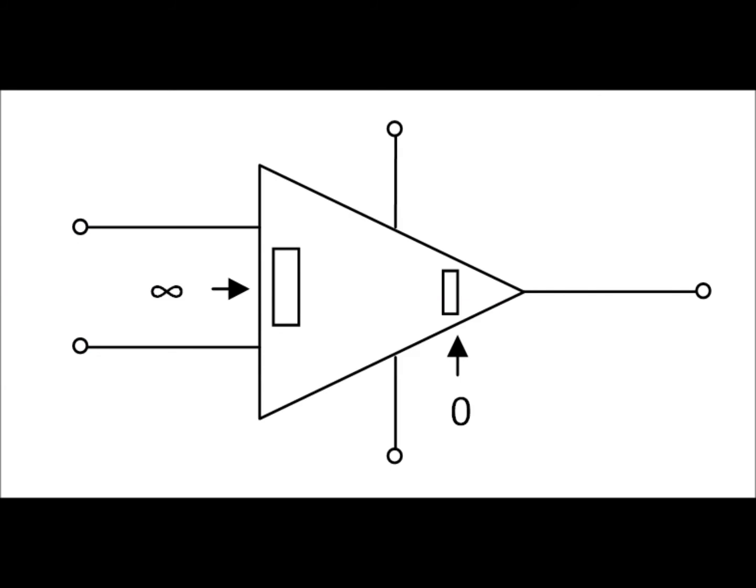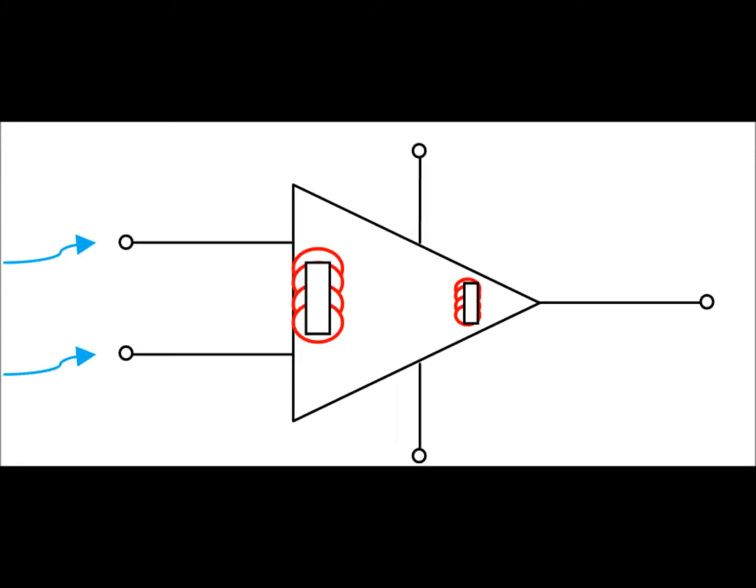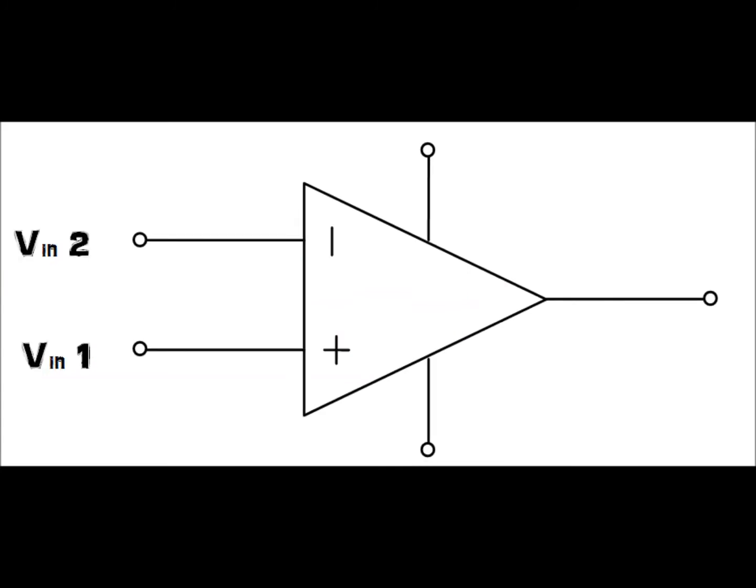The output resistance will ideally be zero. However, this is also impossible, so it's generally as low as maybe one or two ohms. This is because we want all the output voltage to be developed over the rest of the circuit and not dissipated by any of the op-amp's internal components.